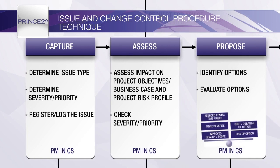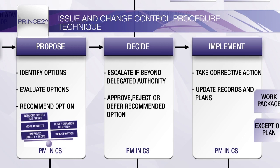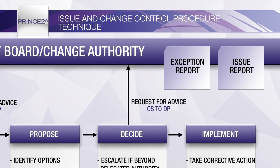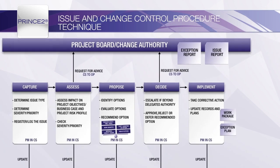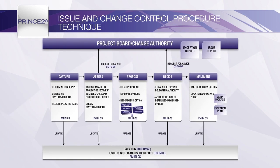After impact analysis, the Project Manager needs to identify options to respond to the issue. When considering these, there needs to be a balance between the advantage of implementing an option against the costs, time and risks. Any issues that can be resolved within the agreed tolerances for the stage and project can be implemented by the Project Manager. There may be a need to adjust the stage plan and create additional work packages, but as long as this is within the constraints set by the Project Board, this is fine. For issues that cannot be resolved within the agreed tolerances, the Project Manager will need to create an Exception Report, which explains the full situation, and escalate this to the Project Board for a decision. Throughout the procedure, the Issue Report will be updated to record the impact analysis and the Issue Register will be updated to record changes in priority, severity and status.